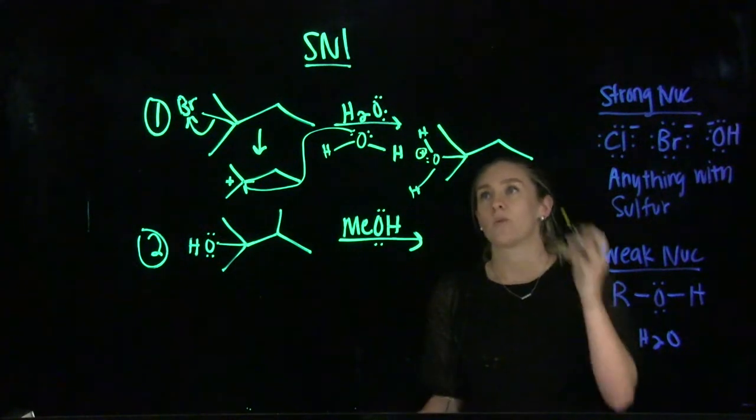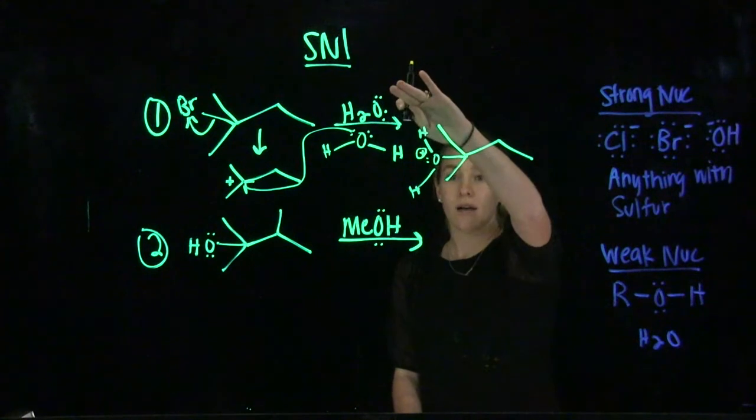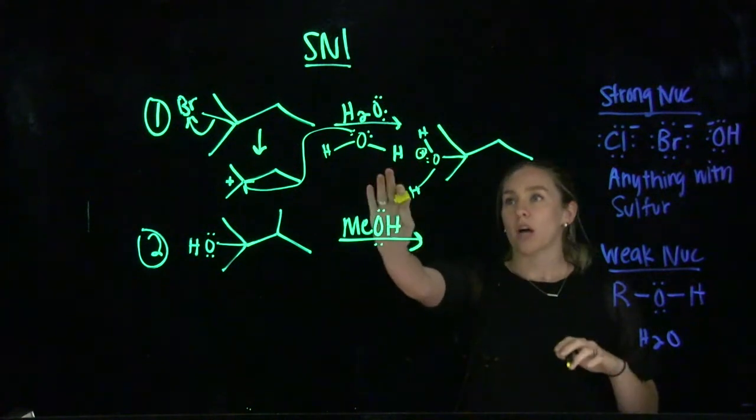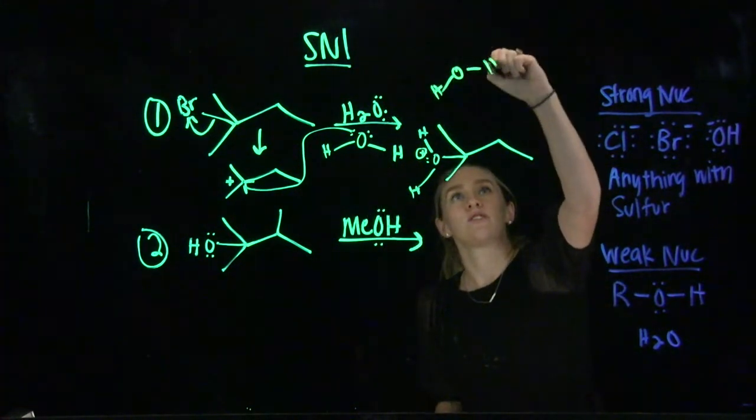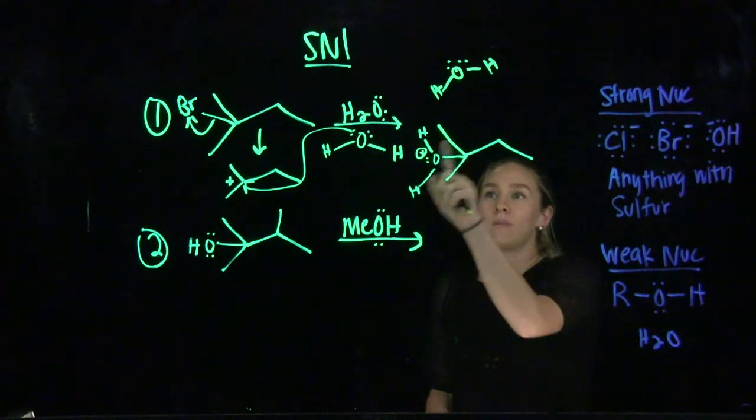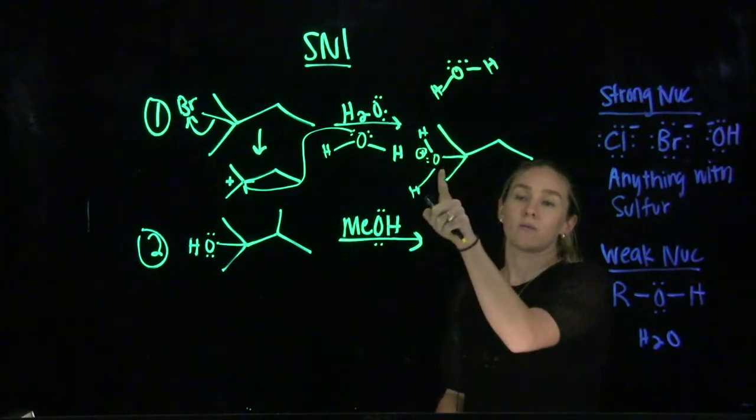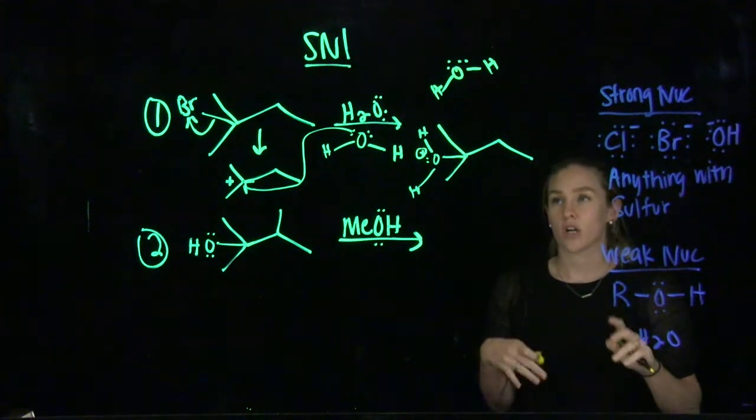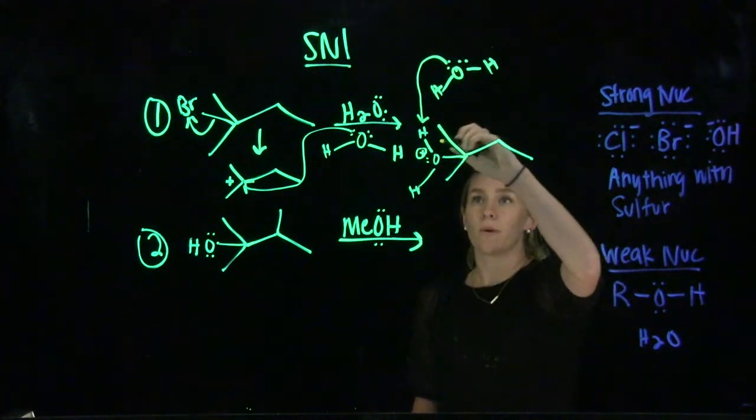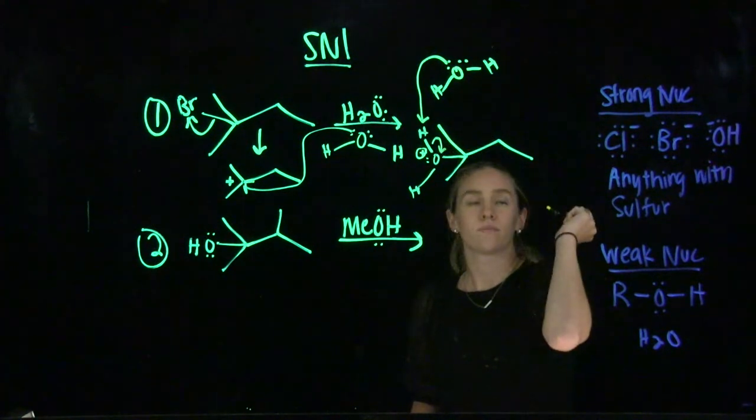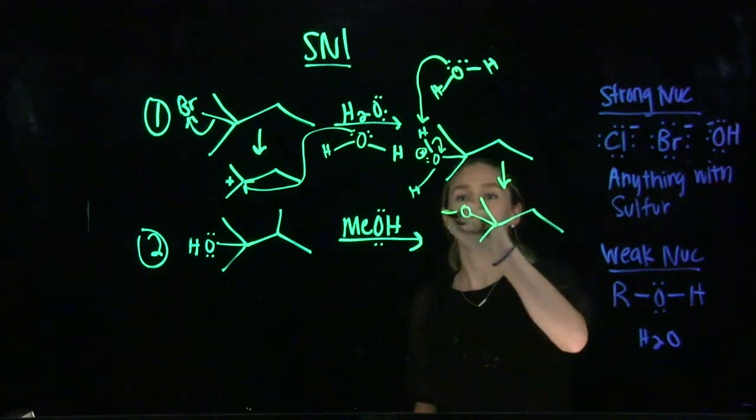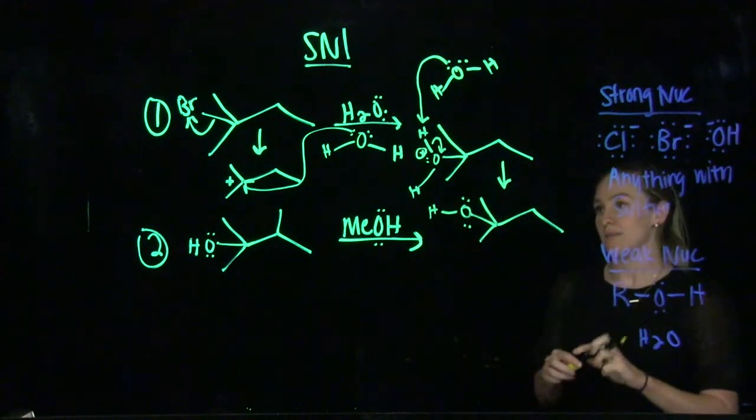We want to somehow get rid of that positive charge on the oxygen. So the way we're going to do this is we're going to have a proton transfer. We have water as our reagent. We know that water can also act as a base. So we're going to use that water, and we're going to use it to grab one of the protons off of our new substituent. Because by taking one of these protons and donating the electrons back to the oxygen, that will get rid of the positive charge. So the base grabs the proton. The proton donates its electrons back to where it came from. And that is going to leave us with just an OH group that we substituted for.